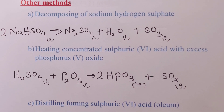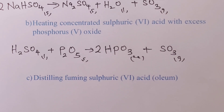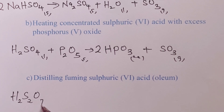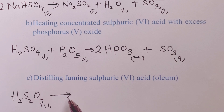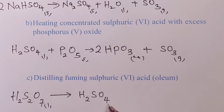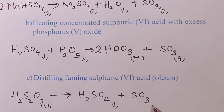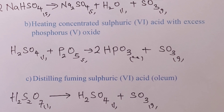Finally, we can get sulfur trioxide through distilling oleum (H2S2O7). When we heat carefully and collect the sulfur trioxide in a very dry receiver — also subjecting the receiver to freezing temperatures — we are able to get it. These are the other three methods available for preparation of sulfur trioxide gas. We end our video by looking at uses of sulfur trioxide.